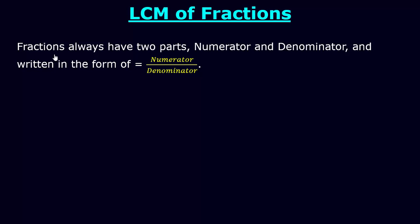As we know, fractions always have two parts: numerator and denominator, written in the form of numerator on top and denominator at the bottom. So this is the form of a fraction number. Remember, here the denominator should not be zero at any condition.